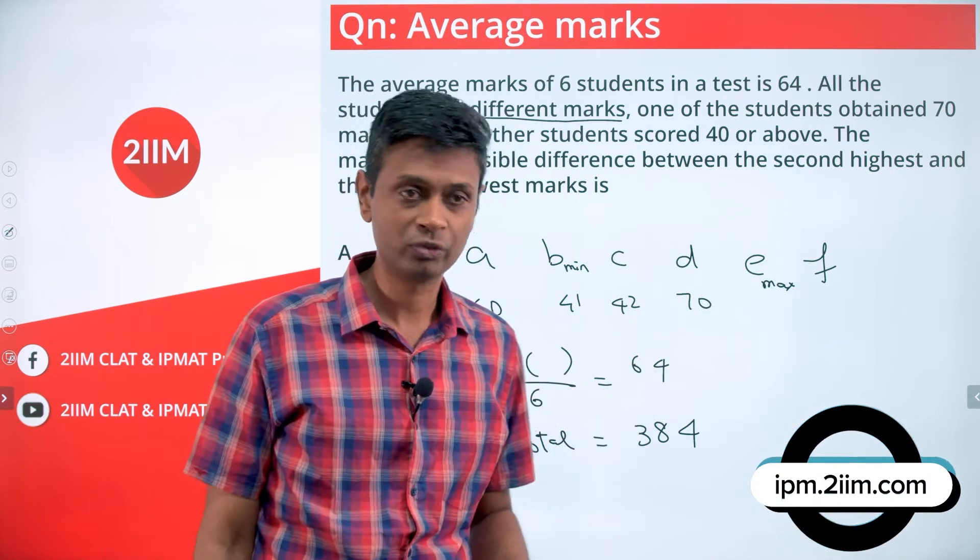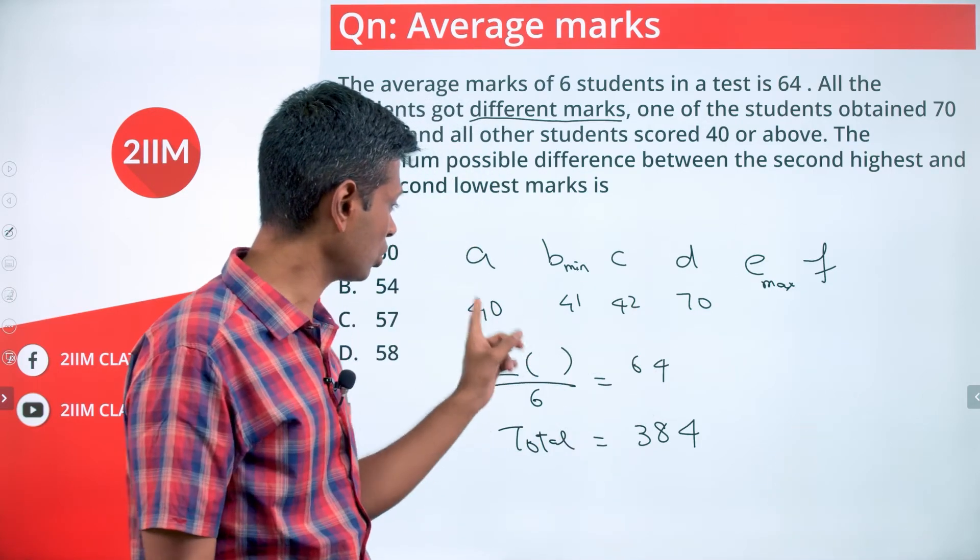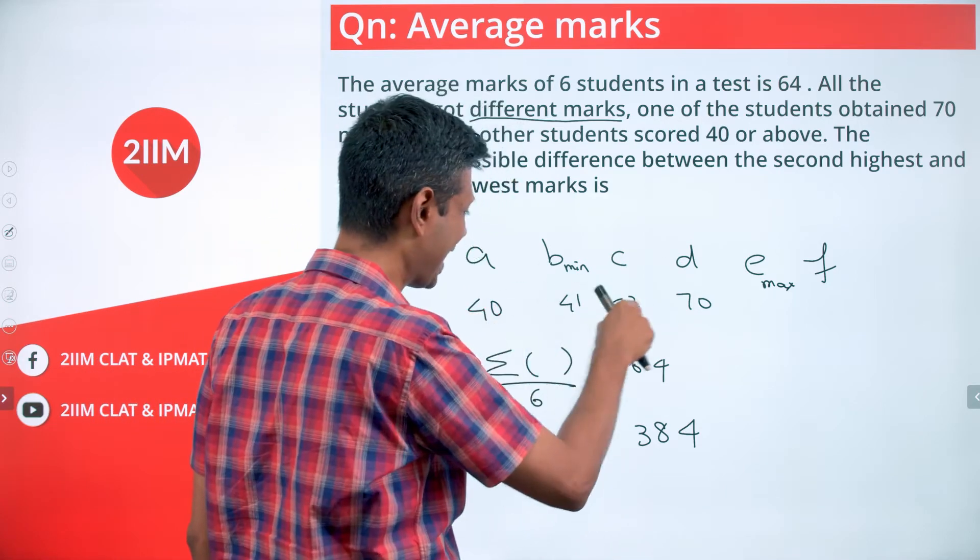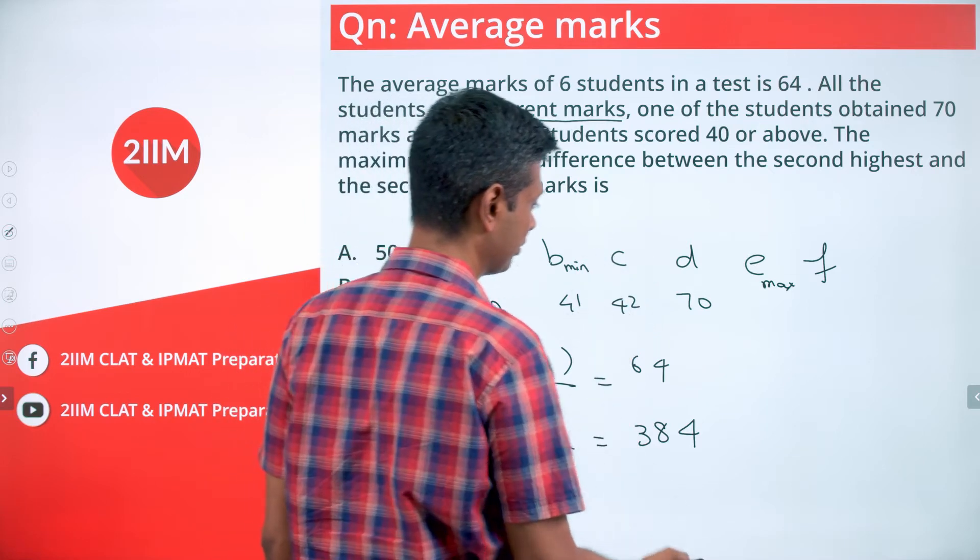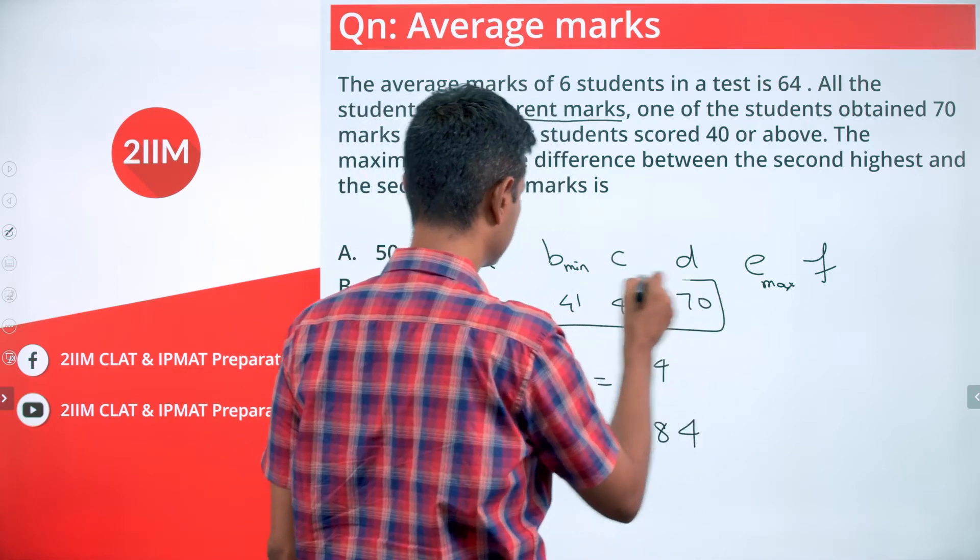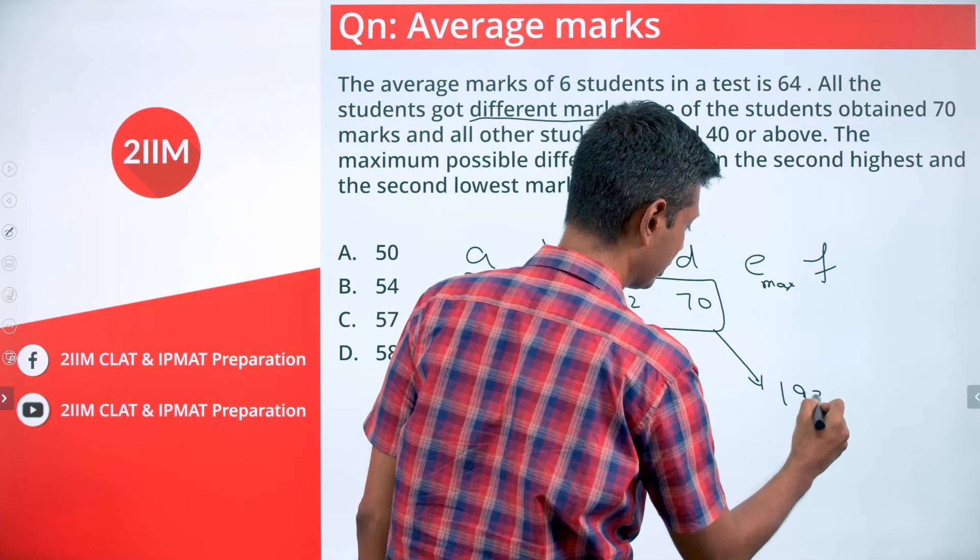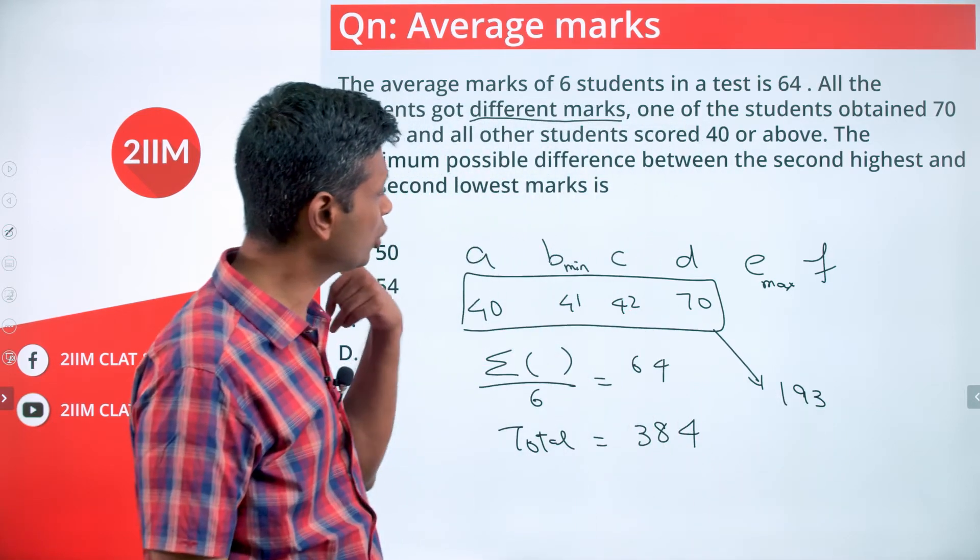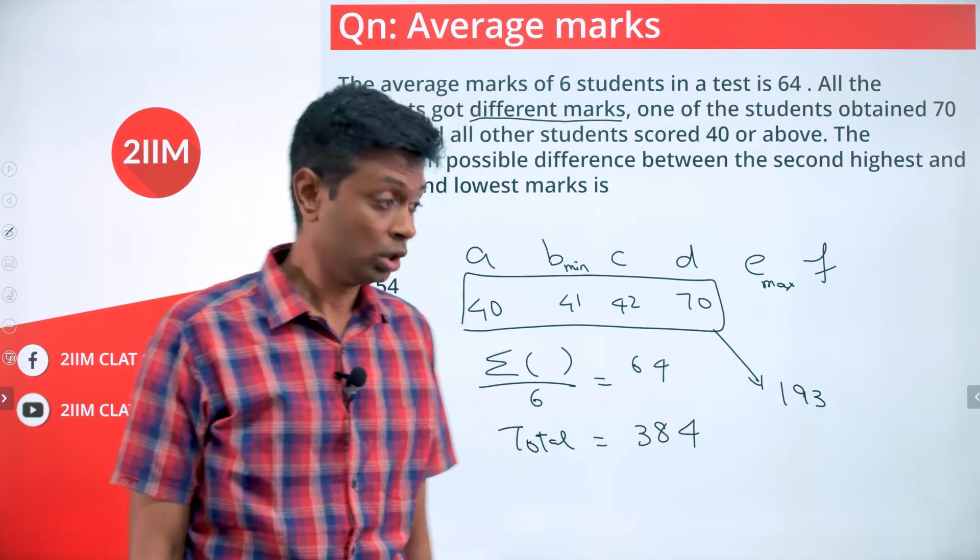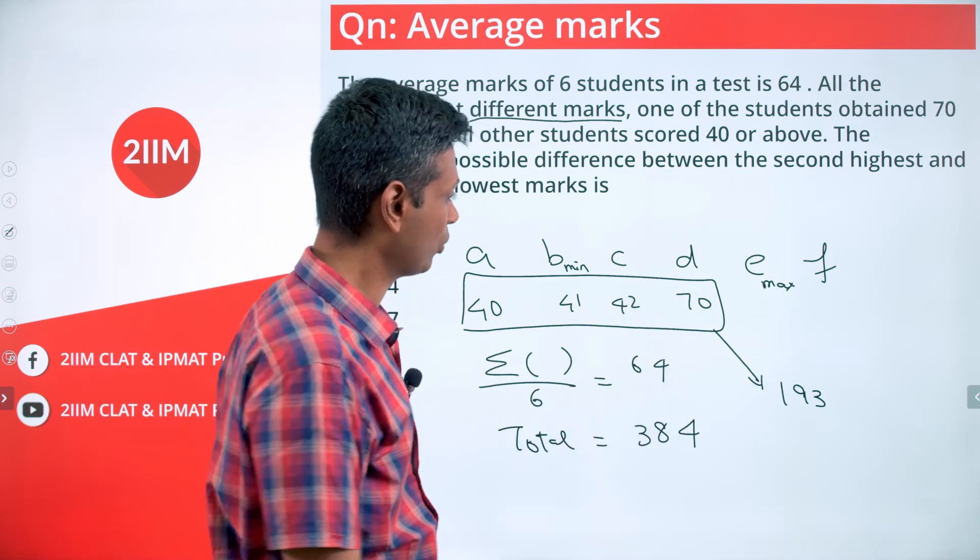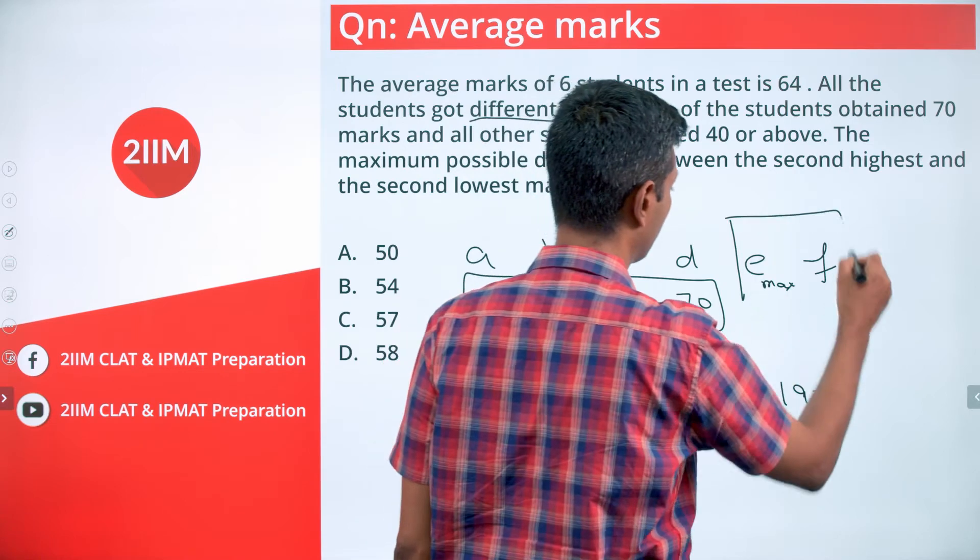Now let's worry about e and f. If you add these four: 40, 41, 42, 70. These three add up to 123 plus 70, so these four add up to 193.